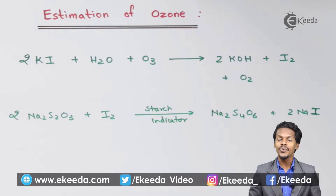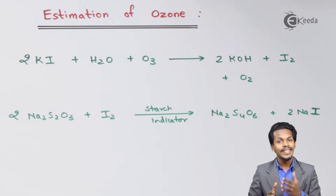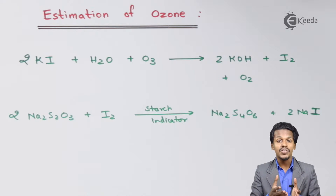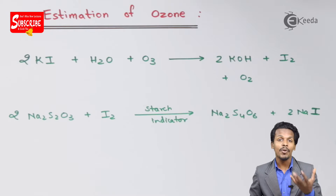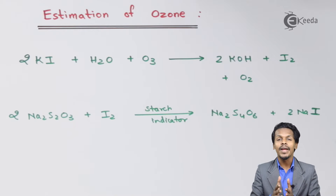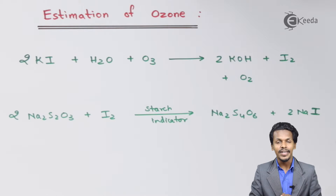In this topic we are going to talk about the quantitative analysis of ozone, and for that we need basically potassium iodide. Potassium iodide is treated with ozone, also in the presence of water, so as to obtain iodine as a product. That iodine is then treated with sodium thiosulphate in the presence of a starch indicator, and also at a pH of 9.2. In that case we could find the color change and also determine the percentage of ozone by titration.